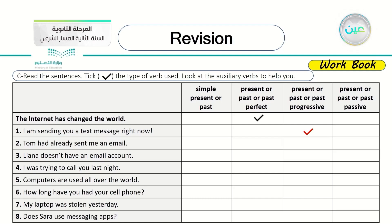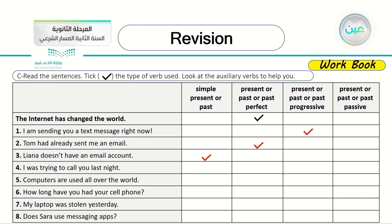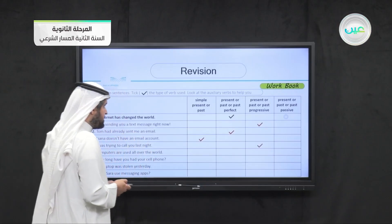Number two: 'Tom had already sent me an email.' That's the same as the example — present perfect or past perfect — because of the word 'had.' Number three: 'Liana doesn't have an email account.' That is simple present or past — simple present. Number four: 'I was trying to call you last night.' Because of 'was' and the '-ing' ending, this is past progressive.